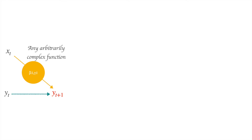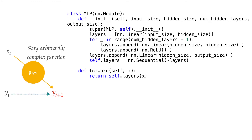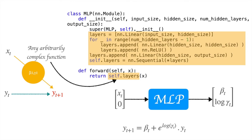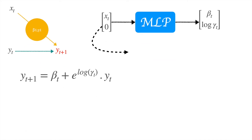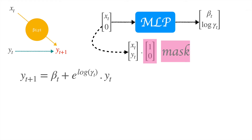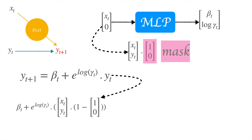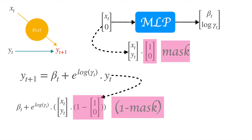So how do we get these parameters beta and gamma from x_t or y_t? It could be any arbitrarily complex function, which in this case turns out to be a neural network. We will be using a small neural network which takes x as input and outputs beta and gamma. This function is self.layers, which takes x_t[0] as input and outputs beta and log of gamma. Then y_{t+1} is equal to beta_t plus e to the power of log gamma_t times y_t, which is the same as gamma_t times y_t. Notice that x_t[0] can be written as an element-wise product of the input vector (x_t, y_t) times (1, 0), which we call a mask. The output can be rewritten as beta_t plus gamma_t times the input vector times (1 minus mask). This is how we implement these operations.